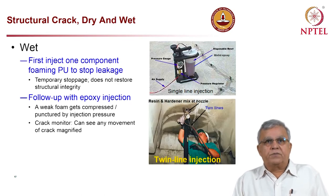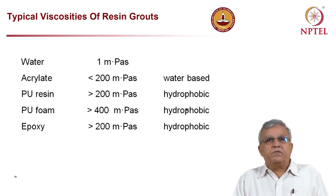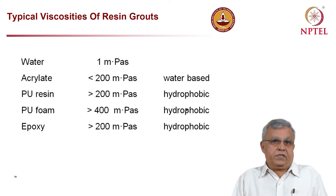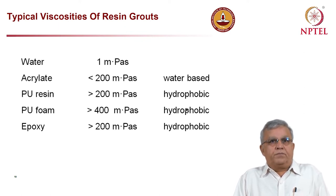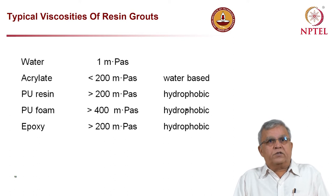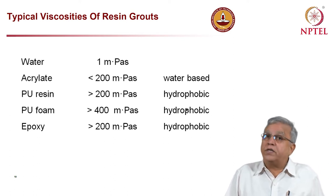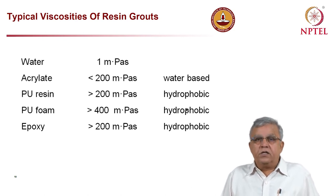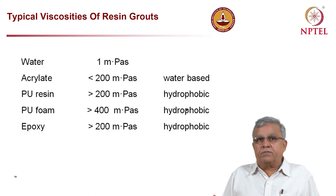Typical viscosities of different injection grouts: water is 1 mPa·s; acrylates for crack injection are less than 200 mPa·s; hydrophobic PU resin is more than 200 mPa·s; PU foaming resin is more than 400 mPa·s; and epoxy is about 200 mPa·s and above. This gives an indication of material types and their available viscosities.